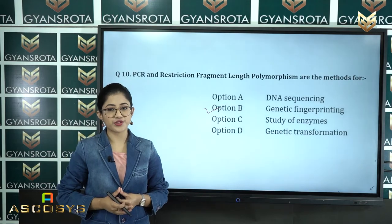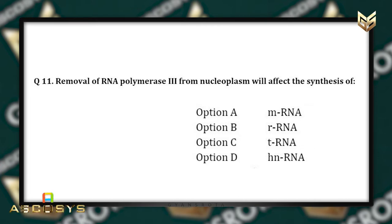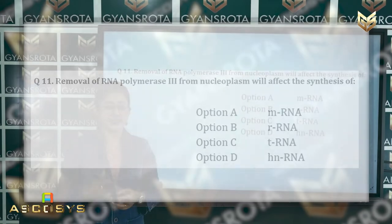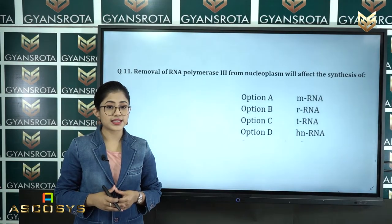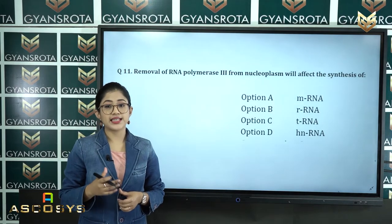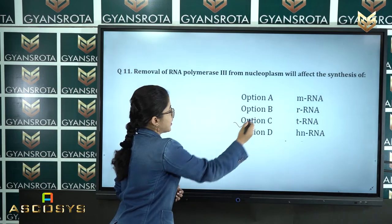Question number 11: Removal of RNA polymerase 3 from the nucleoplasm will affect the synthesis of — option A mRNA, option B rRNA, option C tRNA, option D hnRNA. This is from the chapter Molecular Basis of Inheritance. The correct answer is option C, tRNA — transfer RNA.